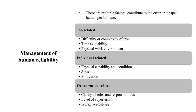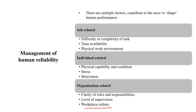Individual factors include physical capability and conditions, stress, and motivation. Organizational factors include clarity of roles and responsibilities — for example, in an assembly line with two workers, who is doing what must be clear. If there is not enough clarity, there will definitely be a chance of mistakes and accidents. Level of supervision and workplace culture are also very important — how we interact with peers and supervisors, the level of freedom and responsibilities — all those things matter when talking about human reliability.